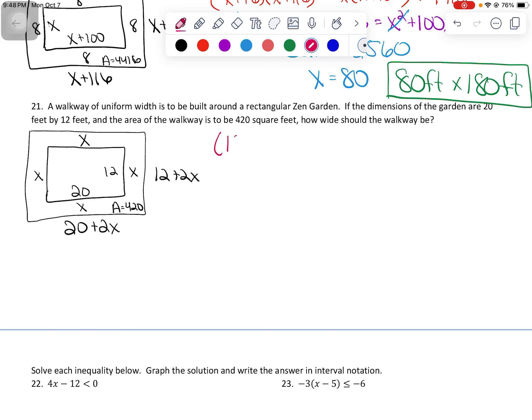And I tend to fall into the same patterns for all of these problems in terms of setting up the equations. So the area of the big rectangle, so 20 plus 2X times 12 plus 2X, equals the area of the little rectangle, so 20 times 12, plus the area of the border, which was given to you as 420.